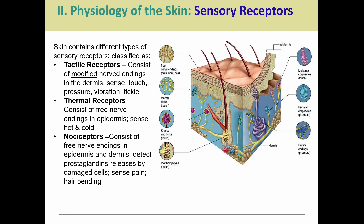Let's start with receptors. We have a few different types and classifications: tactile receptors, thermal receptors, and nociceptors. Tactile receptors are modified nerve endings for the sense of touch — things like tickling, touch, pressure, and vibration.